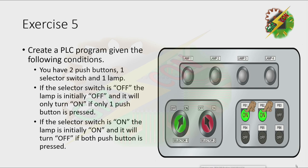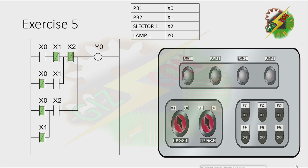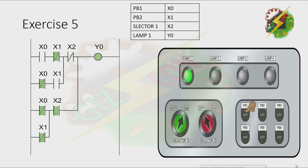Here is my answer to Exercise 5. Let's press PB1 — lamp turns on. Let's press PB2 — lamp turns on. Then pressing both PB1 and PB2 — lamp turns off. Now let's turn on the selector switch. Pressing PB1 — nothing happened. Pressing PB2 — nothing happened. Then pressing both push buttons — the lamp turns off. That's how we solve Exercise 5.